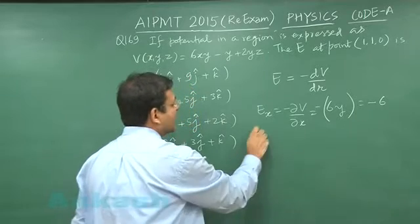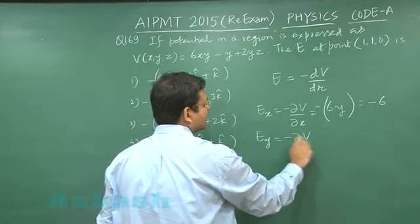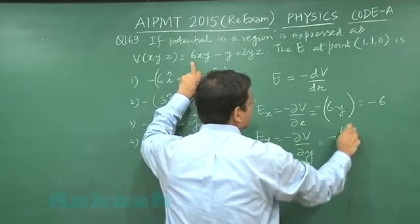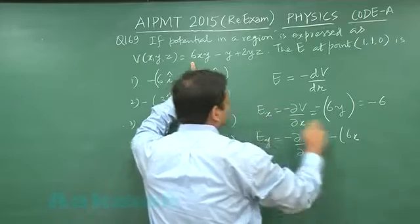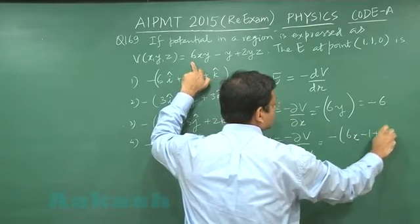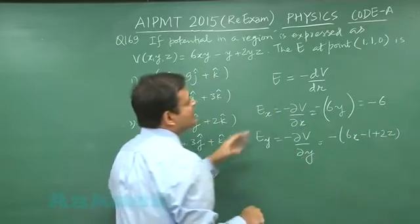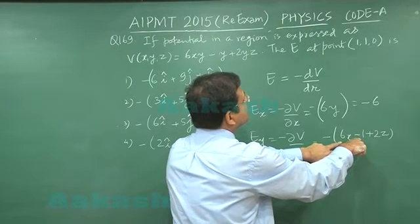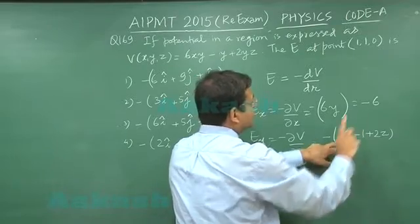On the similar line, if you differentiate it with respect to y, minus del V by del y, this will be simply you can say minus of 6x minus 1 plus 2z. You understand, and you substitute the value of x as 1. So this is 6 minus 1, that is 5, and z value is 0.